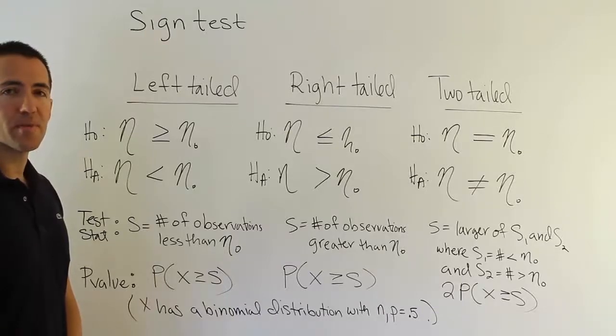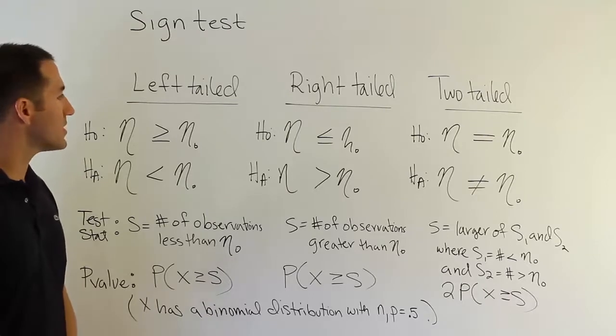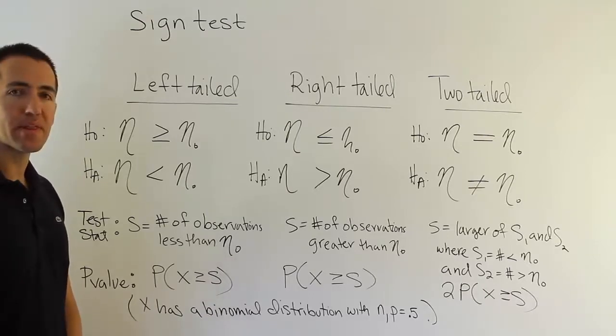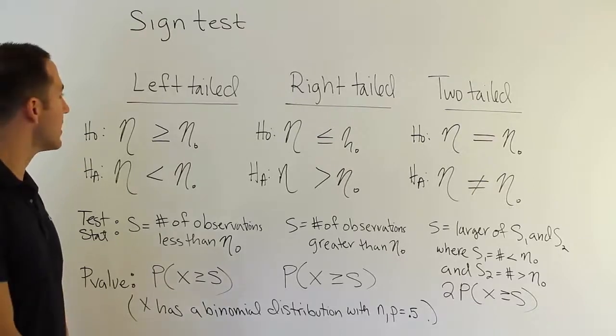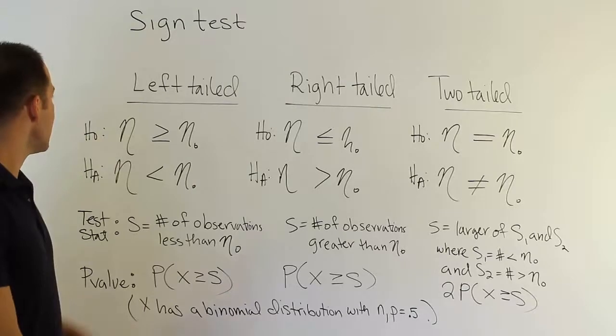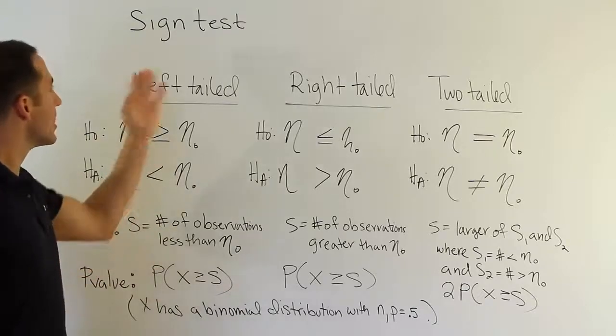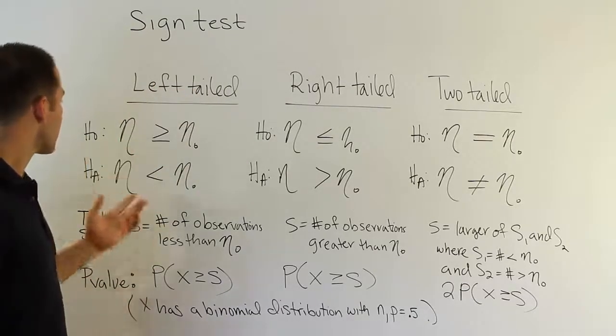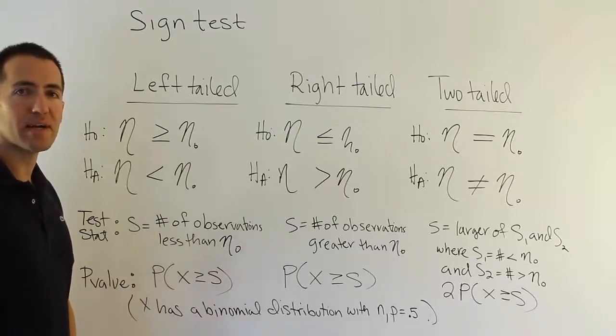In this video we're discussing a non-parametric procedure called the sign test. The procedure is for dealing with one population, and we're trying to discuss whether or not we think the median is in a certain location. We're talking about the median here because the test is non-parametric, and we actually have some properties about the median that help make this test possible.